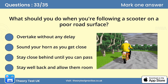Question 33. What should you do when you're following a scooter on a poor road surface? The answer is D: Stay well back and allow them room. On a poor road surface, the rider may need to move out to avoid potholes. You may not get much warning. A look to the right or a lifesaver check may warn you that they're about to move out. Stay well back and allow the rider plenty of room until you can pass safely.